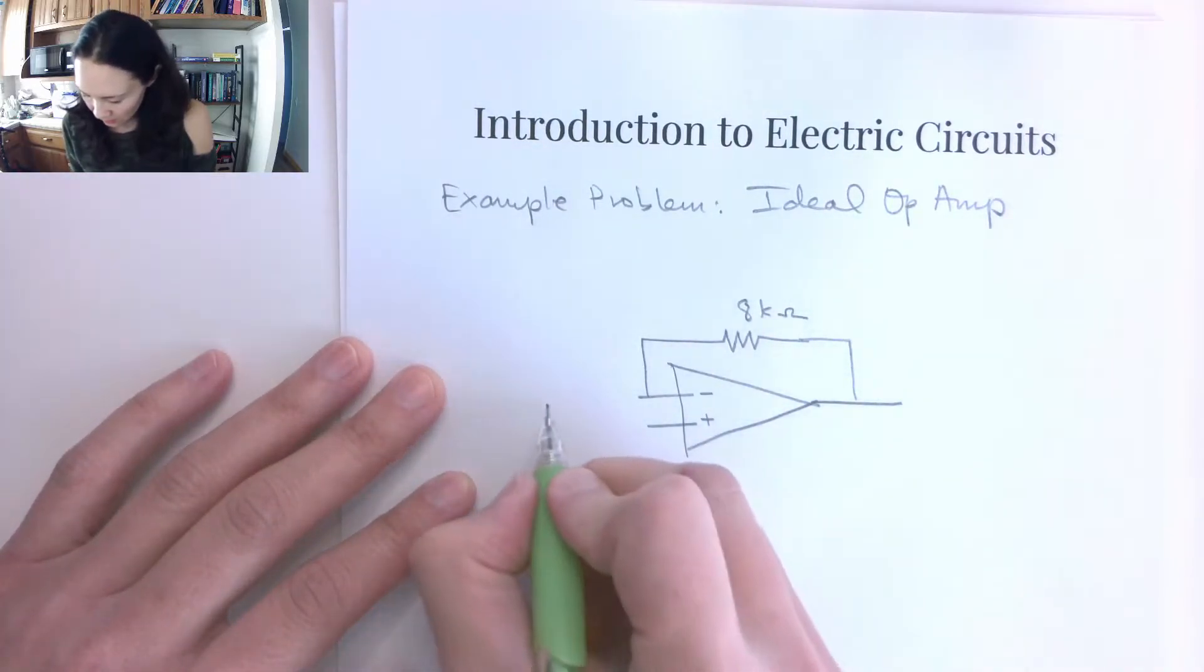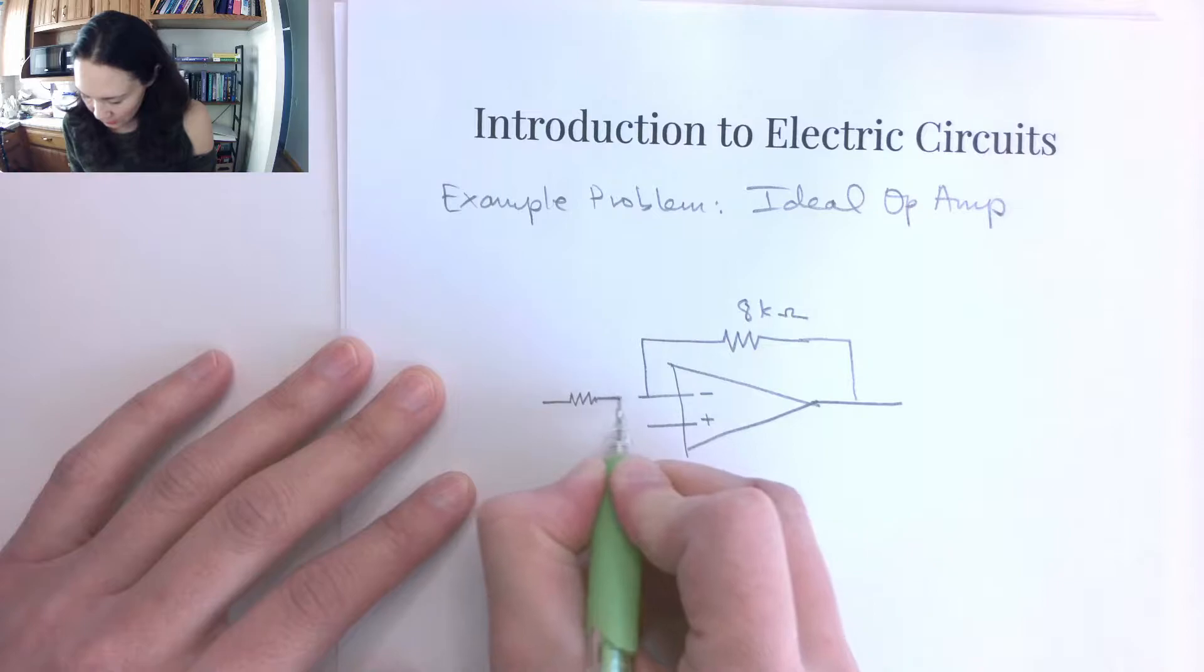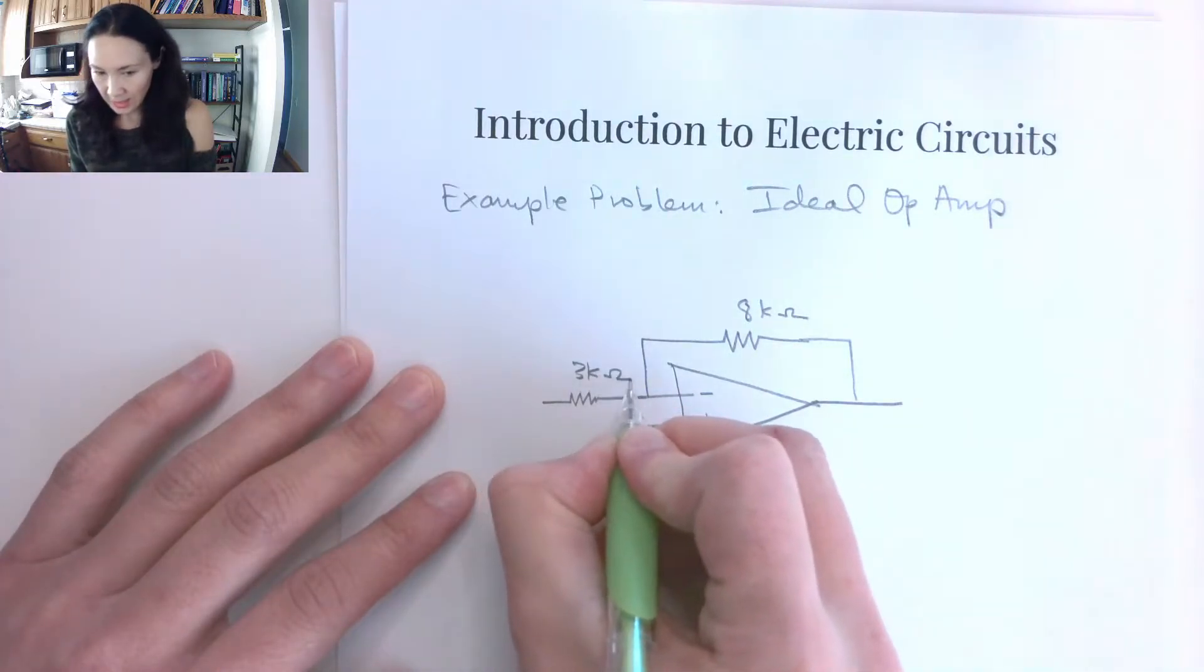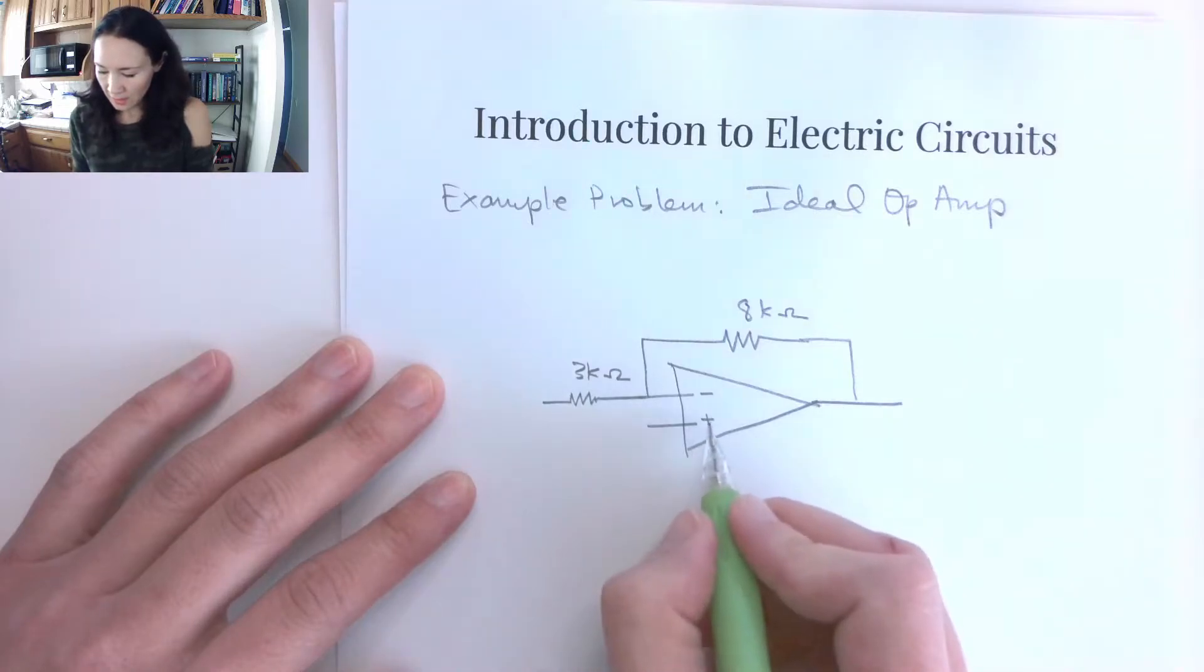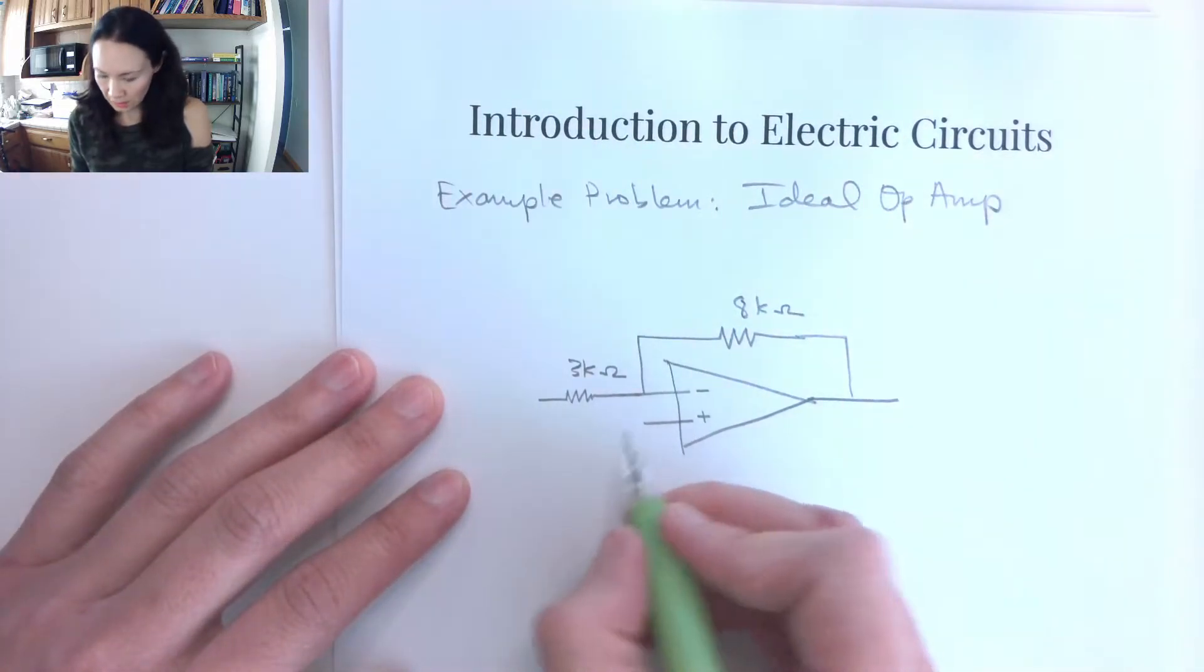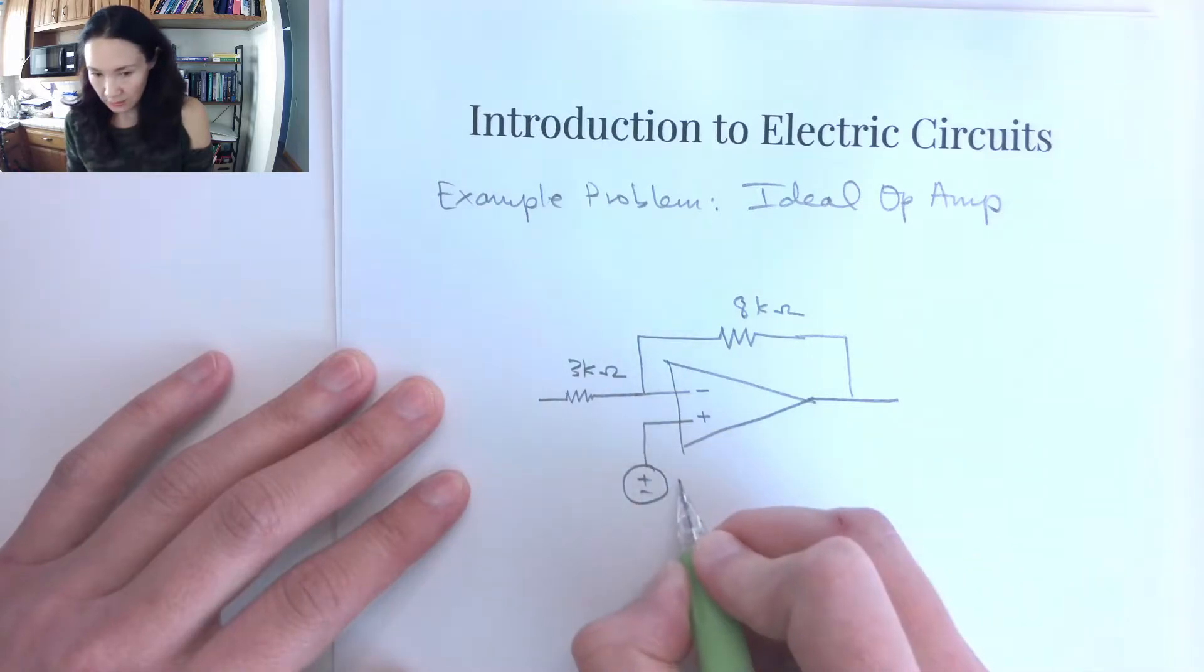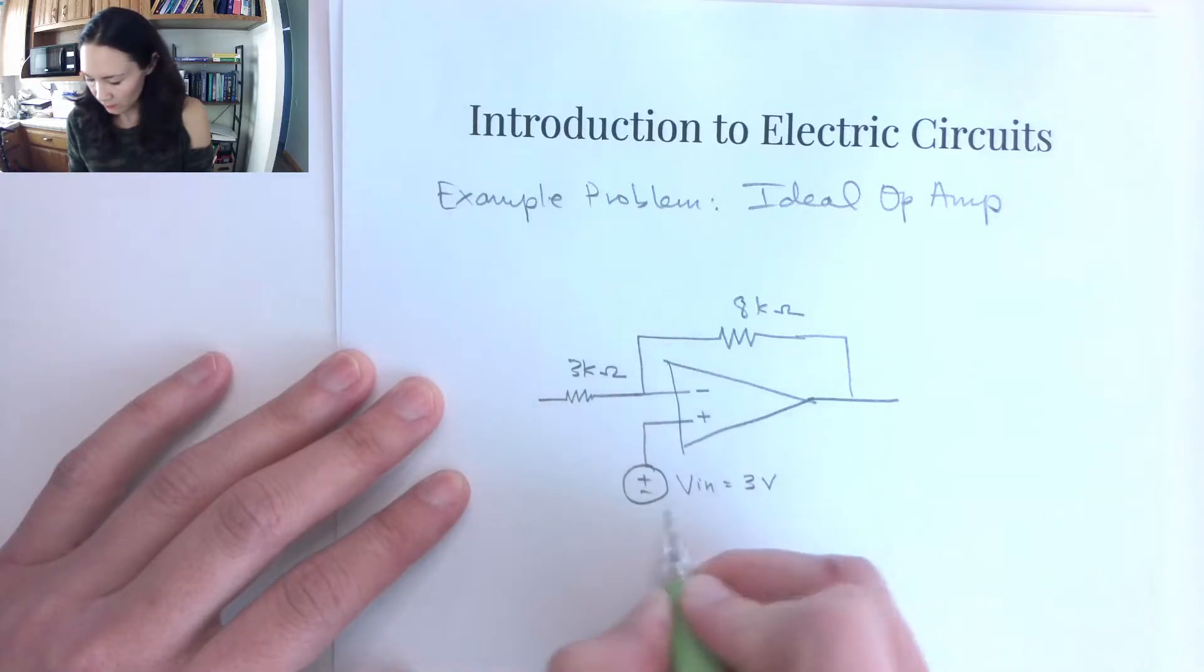And then let's say that there is a resistor attached to the input here. Let's let this be 3k ohms. And then attached to this non-inverting input, let's say we give it a voltage source. So this Vin here, let's let this be 3 volts.